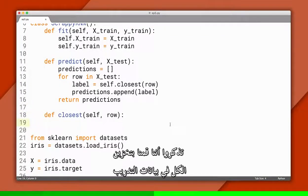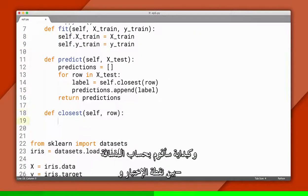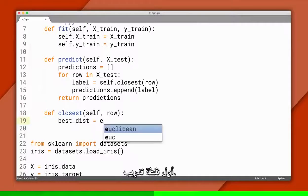Remember that we've memorized the training data in our fit function, and xtrain contains the features. To start, I'll calculate the distance from the test point to the first training point.